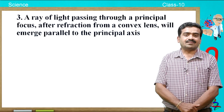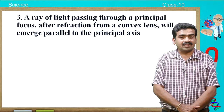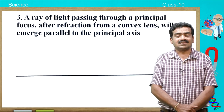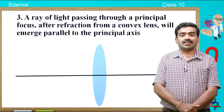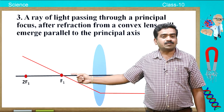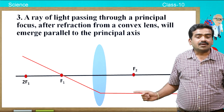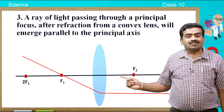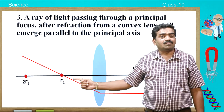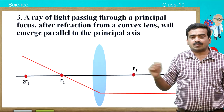The third important point is: a ray of light passing through the principal focus, after refraction from a convex lens, will emerge parallel to the principal axis. It is just the reverse of the first point. So, when a ray of light passes through the principal focus obliquely, after refraction it moves parallel to the principal axis. If it is parallel to the principal axis after refraction, it passes through the principal focus — it is just opposite to the first property.